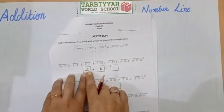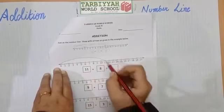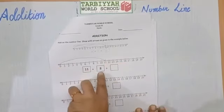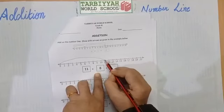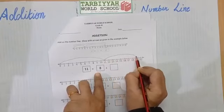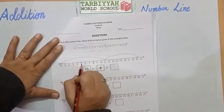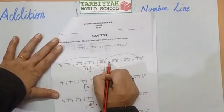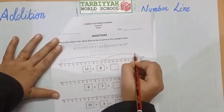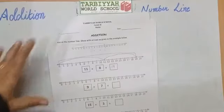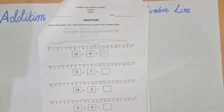As in the same way, 11 plus 8: we have to start from 0 to 11, then move forward 8 numbers: 1, 2, 3, 4, 5, 6, 7, 8. So the total count is: 1, 2, 3, 4, 5, 6, 7, 8, 9, 10, 11, 12, 13, 14, 15, 16, 17, 18, 19. The answer is 19. 11 plus 8 is 19. So, my dear students, this you have to solve by yourself.